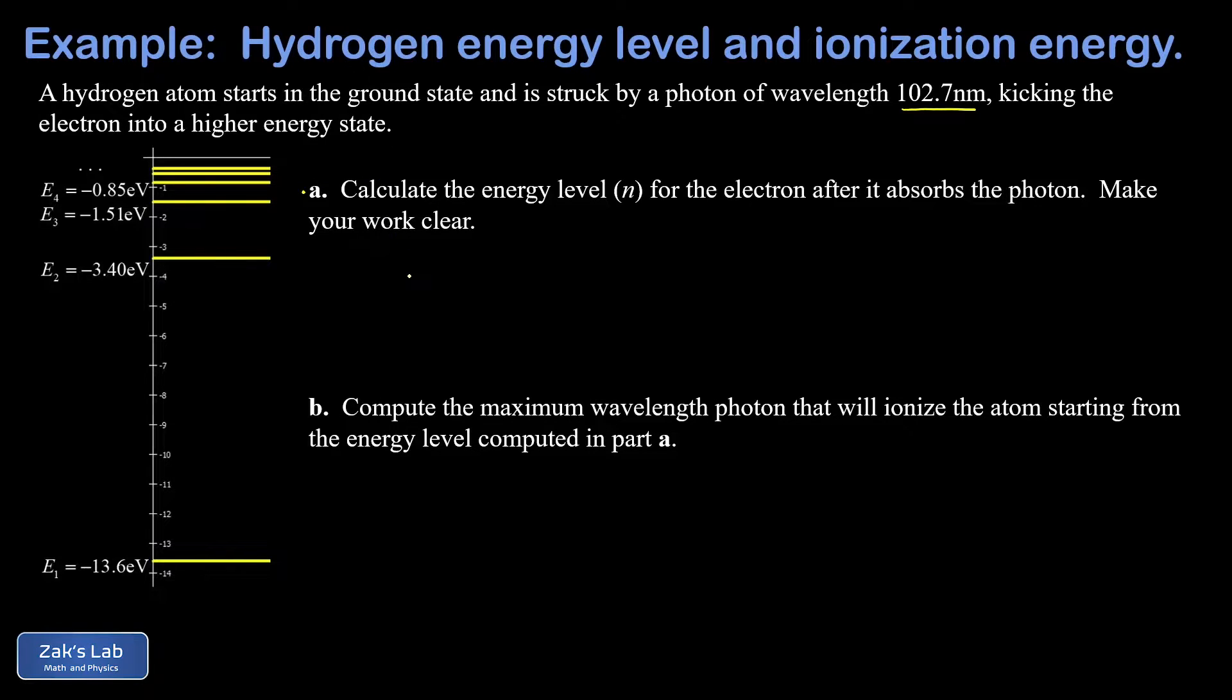So what we need to do here is figure out how much energy that photon was carrying. The energy of a photon is given by E = hf where h is Planck's constant. Now it's very common for us to rework this as hc over lambda, and that just comes from the wave speed formula.